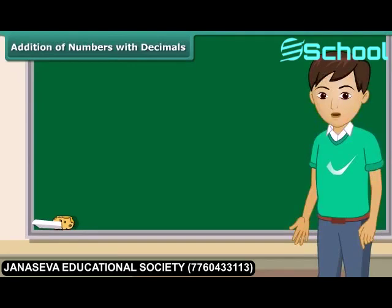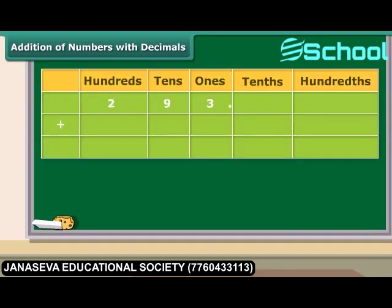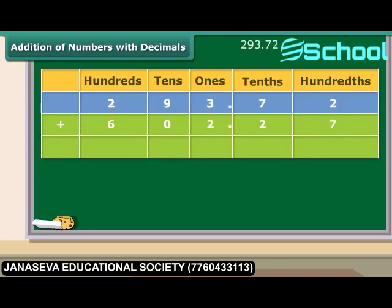Addition of decimals is similar to addition of any other numbers. Write the given numerals one below the other with the decimal points in a vertical line. First add the digits after the decimal point starting with the rightmost digit. If there is any carry-over from the decimal side, it is carried over to the integer side. Let us start with the addition of 293.72 and 602.27.